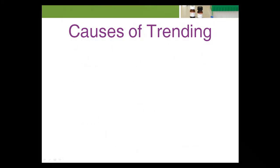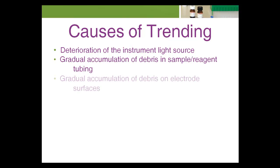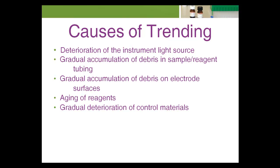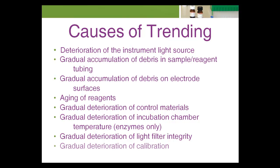A trend indicates a gradual loss of reliability in the test system. Trends are usually subtle. Causes of trends may include deterioration of the instrument light source, gradual accumulation of debris in sample or reagent tubing, gradual accumulation of debris on electrode surfaces, aging of reagents, gradual deterioration of control materials, gradual deterioration of incubation chamber temperature (enzymes only), gradual deterioration of light filter integrity, and gradual deterioration of calibration.